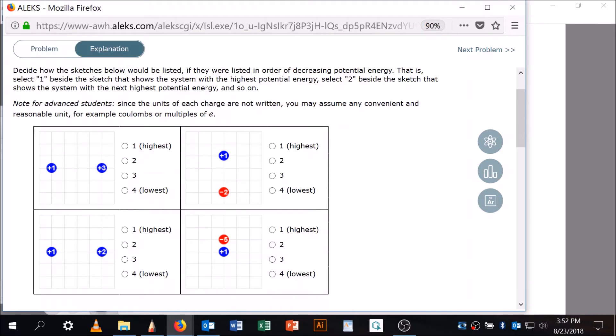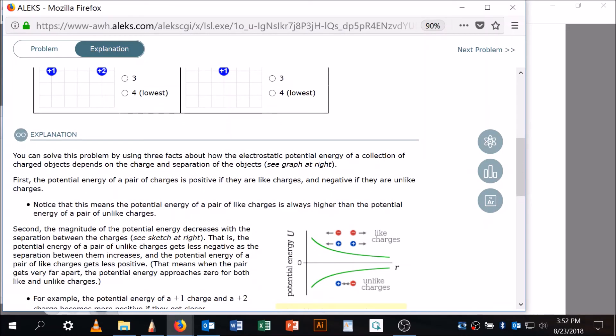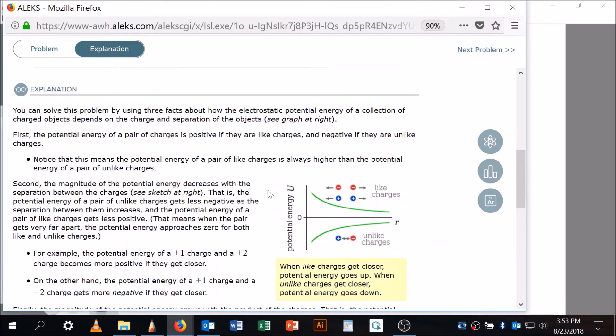Okay, let's look at the explanation now. This is going to be very helpful. You need to read this. All right, so you can solve this problem by using three facts about how electrostatic potential energy of a collection of charged objects depends on the charge and separation of the objects. See this graph down here. Watch this.